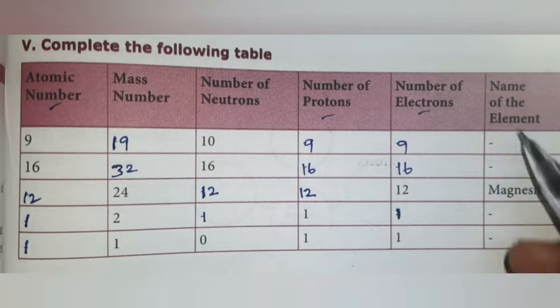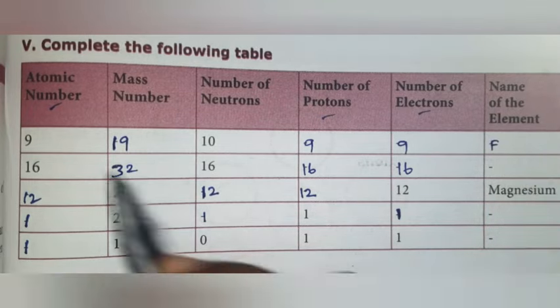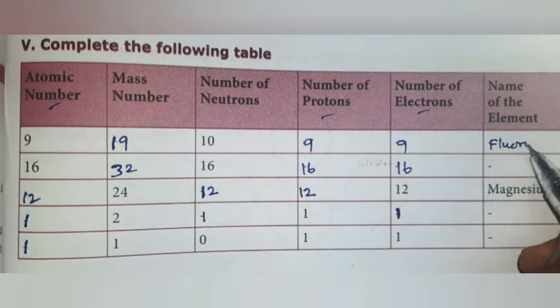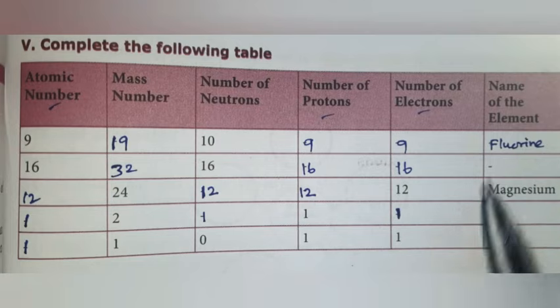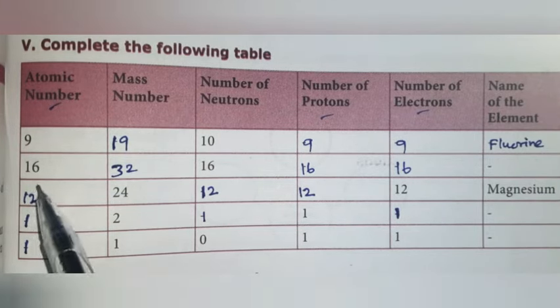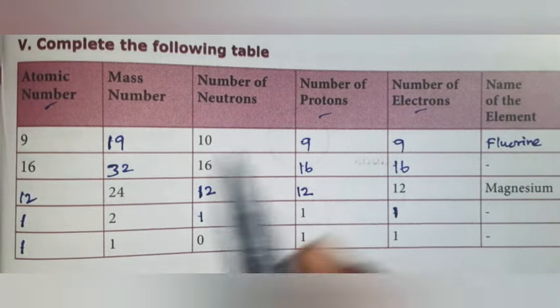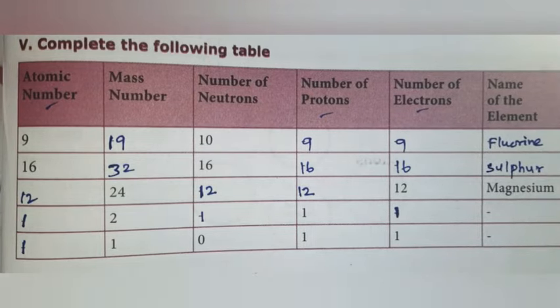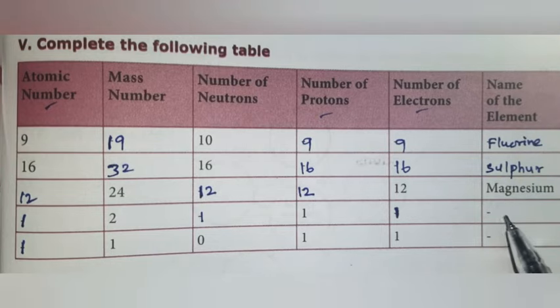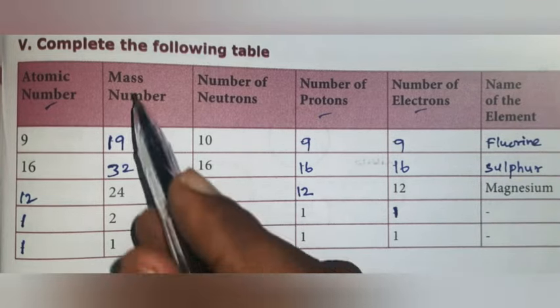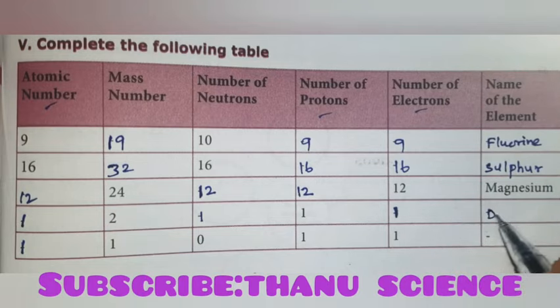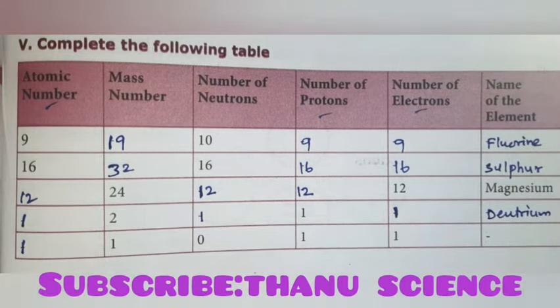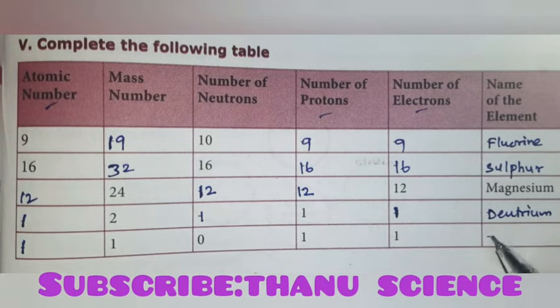Now fill the name of the element. First, fluorine: atomic number 9, mass number 19. Next, sulfur: mass number 32. Magnesium is given in the book itself. Next element, atomic number 1, mass number 2, that is deuterium. Then mass number 1, atomic number 1, this is protium.